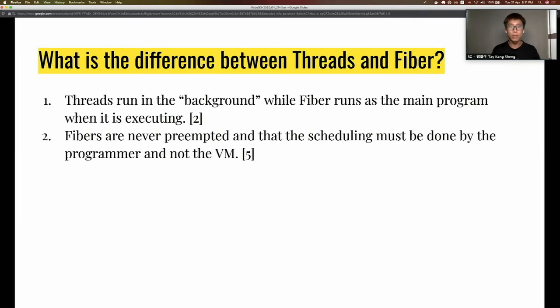During my learning of Fiber, this question kept coming up. From what I can gather: threads run in the background while Fiber runs as the main program when executing. Second, Fibers are never preempted and scheduling must be done by the programmer, not the VM. This means the programmer has more control compared to threads. The OS decides when to pause and start threads, but in Fiber's case, the programmer decides when to press the pause button and when to run the code.